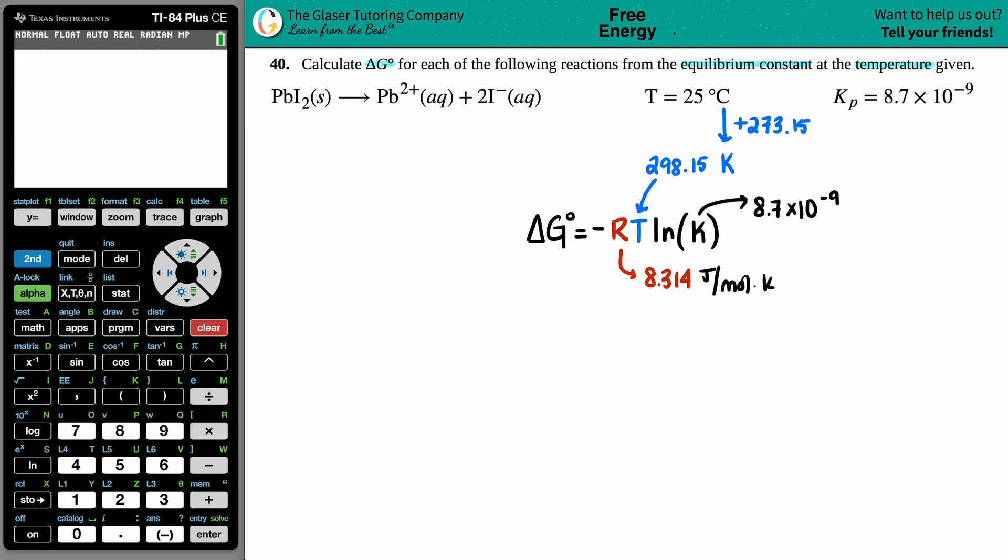All numbers are there, let's solve. ΔG equals negative—it's in the formula—so it's negative times the R value 8.314 times the temperature value room temp, that's 298.15, and then times by the natural log ln of 8.7×10⁻⁹.